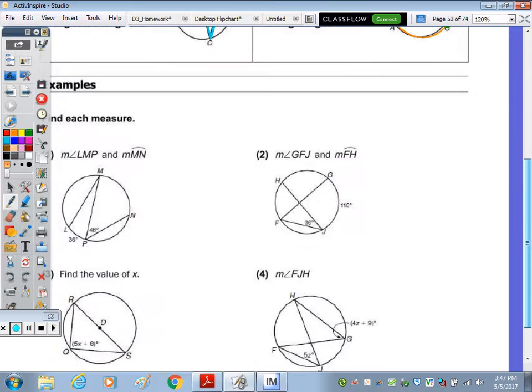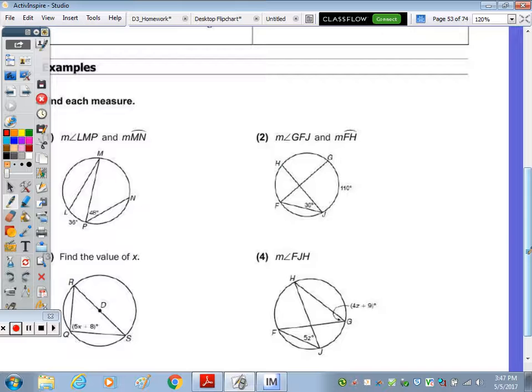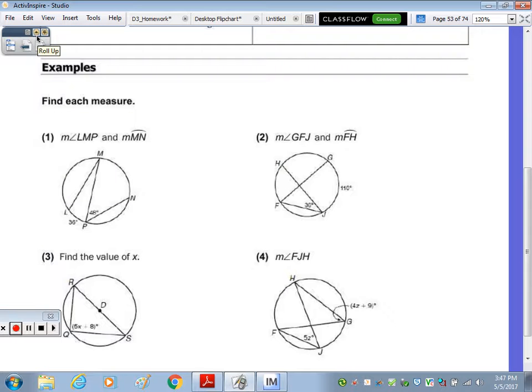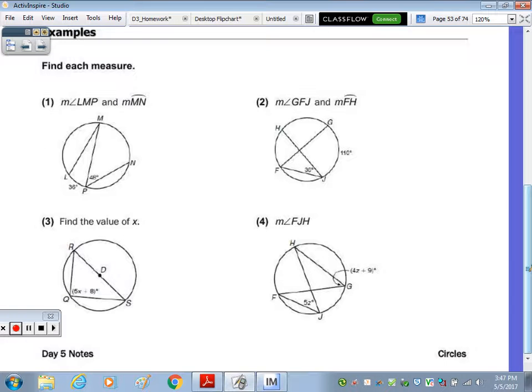So looking at question number one, it says find the measure for the directions. Find the measure, or find each measure. And the first part is to find the measure of LMP. So in tracing LMP, that intercepts this arc. And since the arc is given, it says the measure of that arc is 36. The measure of LMP, I'm going to call X. That angle X would be equal to one half of 36. Half of 36 is 18. So the measure, I'm going to write the answer up here, the measure of angle LMP is 18 degrees.